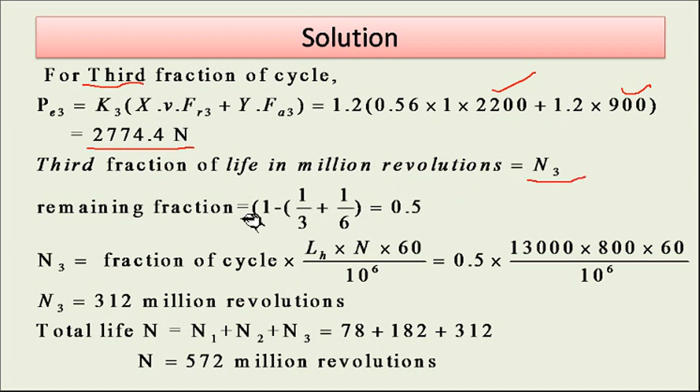For the third fraction of cycle N3, I will use the remaining fraction of cycle, that is 0.5 after subtracting 1/6 plus 1/3. The RPM with which it is rotating is 800. I will be getting 312 million revolutions. When I sum N1 + N2 + N3, I get 572 million revolutions.